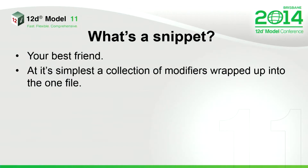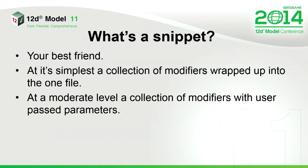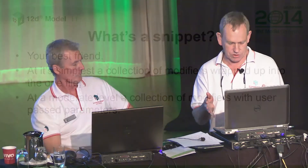At their simplest, snippets are just a bunch of individual modifiers wrapped into the one file. At a moderate level, you've still got a bunch of simple modifiers wrapped into a file, but you need to pass in parameters because some things like a curb and gutter are completely fixed.